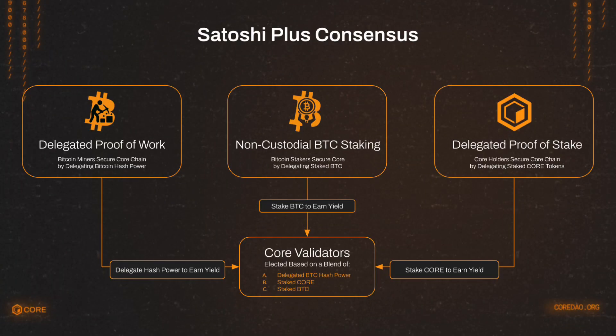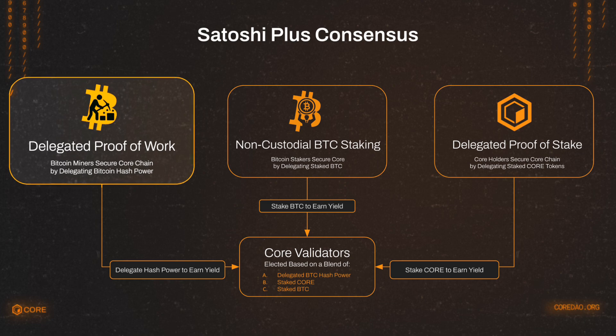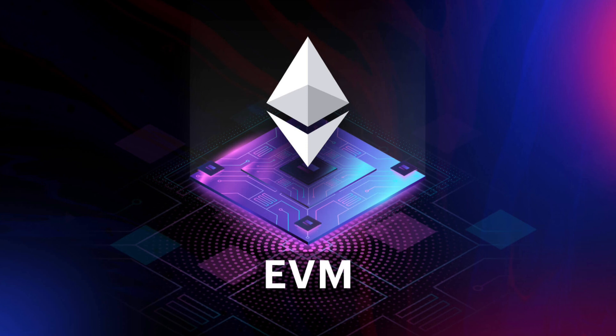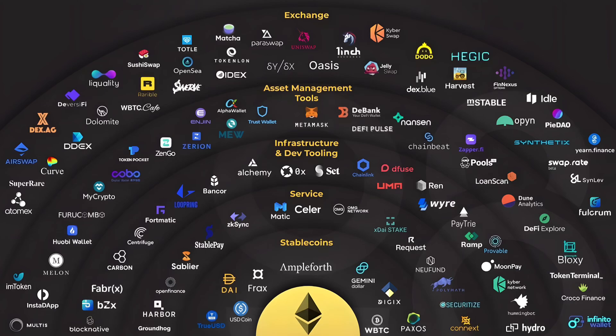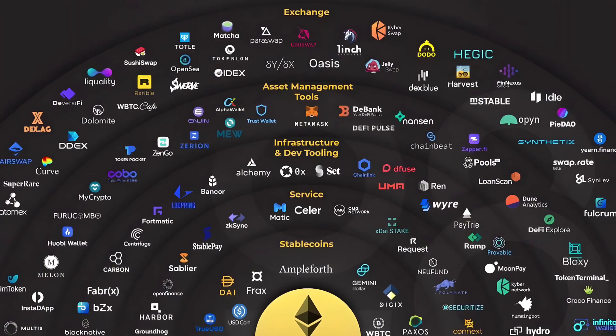Unlike most layer 2 blockchains, Core is designed with Bitcoin at its core — literally. If you look at Core's consensus mechanism, Satoshi Plus, two of its parts are based around Bitcoin: non-custodial Bitcoin staking and proof of work from the Bitcoin miners themselves. Core also helps to secure the Bitcoin miners. And the best part is that Core is completely EVM compatible. EVM is a software platform that allows developers to build dApps and smart contracts, and it's the most popular platform, used on chains like BNB, Ethereum, and many more. So for all the builders who have built applications on these other platforms, moving to Core is as simple as a couple of clicks — but now with the added bonus of integrating Bitcoin.